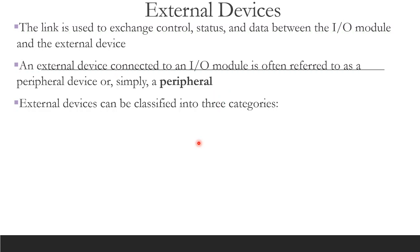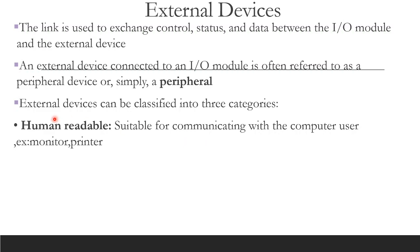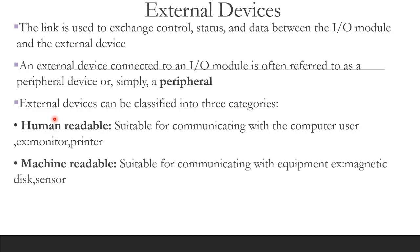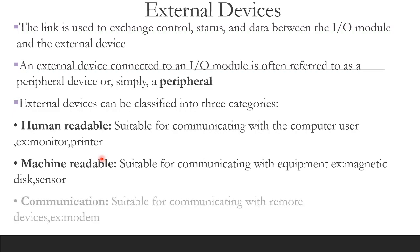The first category is human readable — devices suitable for communicating with the computer user, such as monitor and printer. The second is machine readable — suitable for communicating with equipment, such as a magnetic disk or a sensor. The third category is communication devices — suitable for communicating with remote devices, for example a modem. These are the three categories of peripherals: human readable, machine readable, and communication.